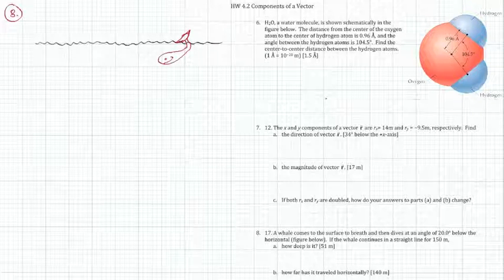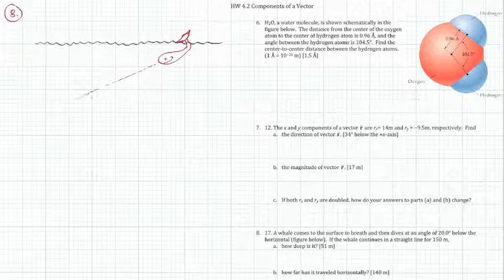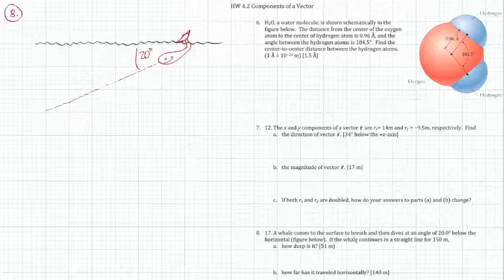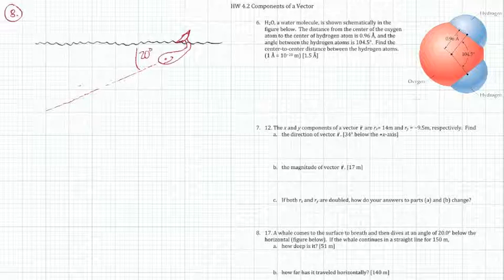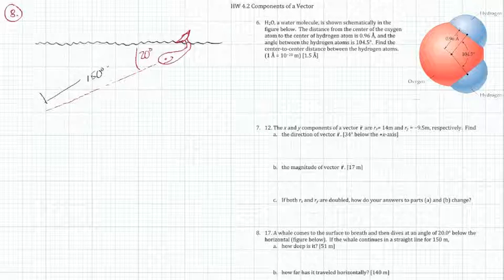Dives at an angle of 20 degrees below the horizontal. So if you recall, this is very similar to the baseball press box from a couple questions back. We've got our whale diving down at 20 degrees below the horizontal. And the whale is continuing in a straight line for 150 meters. So that means that this right here, our hypotenuse, from there to where the whale starts is 150 meters.